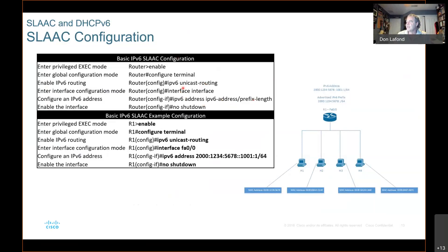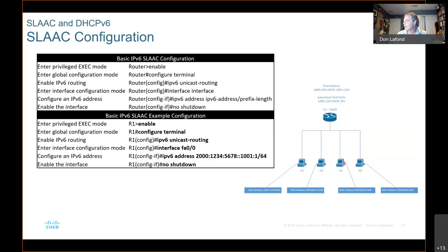This is what we knew before. This is a basic IPv6 SLAAC configuration. In the example here, go into Fa0/0 and give it an IP address. What they're configuring right now is the router — not the hosts. They're just configuring the router to have an interface, right? You have to configure this interface on the router before these hosts are going to be able to talk to the router.